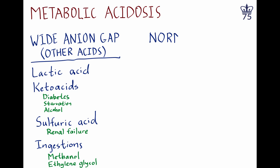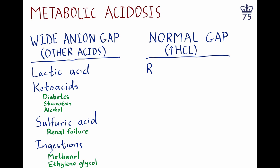When the anion gap is normal in the setting of metabolic acidosis, it implies that there is loss of bicarbonate. Whenever bicarb is lost, you gain hydrogen chloride; the bicarb drops and the chloride is higher, so the gap does not change. You can lose renal bicarbonate in the setting of any renal tubular acidosis, and in the setting of chronic diarrhea you can lose GI bicarbonate. These are the two main etiologies of a normal gap acidosis.